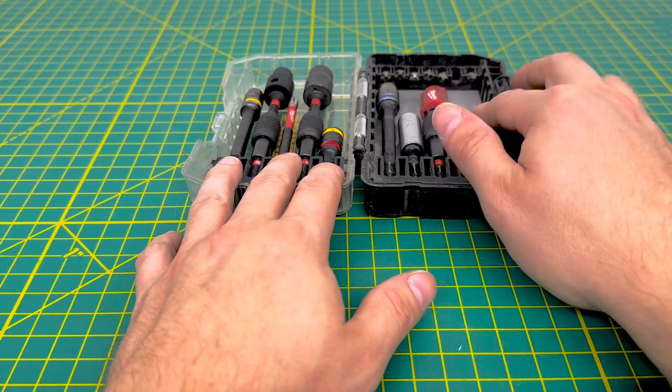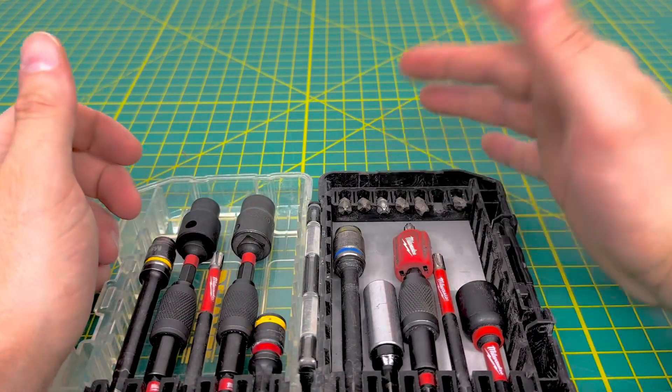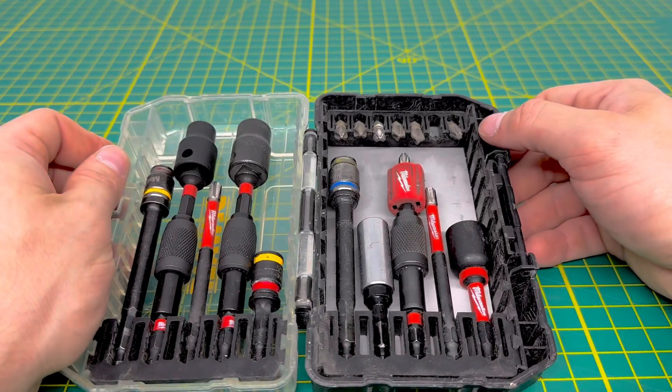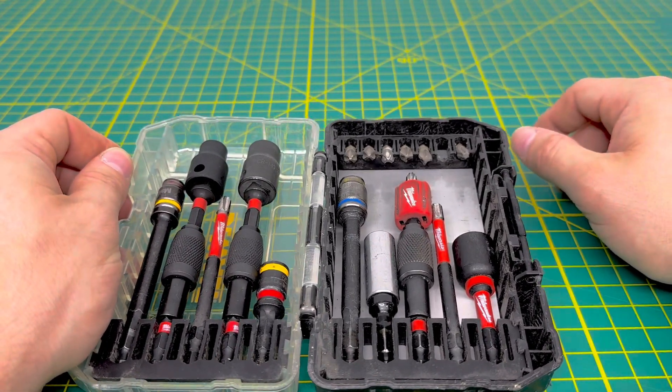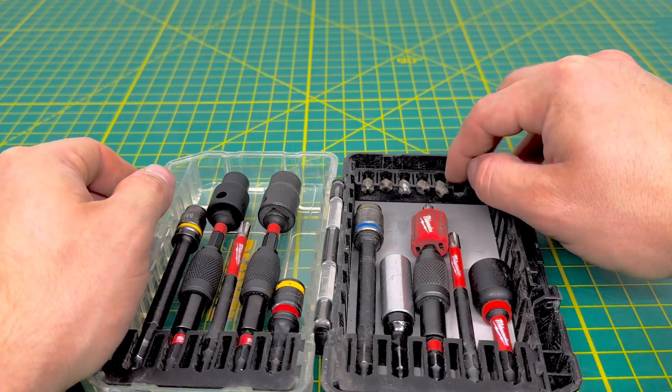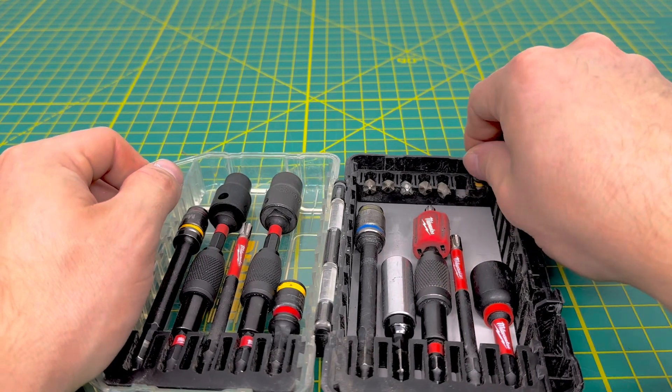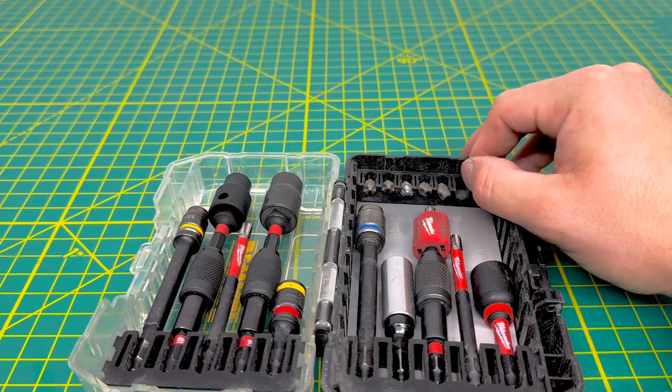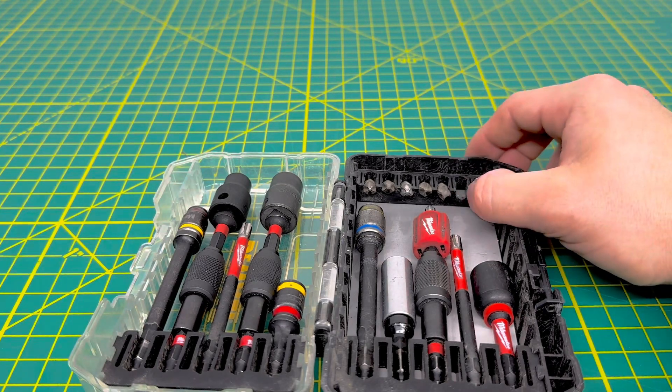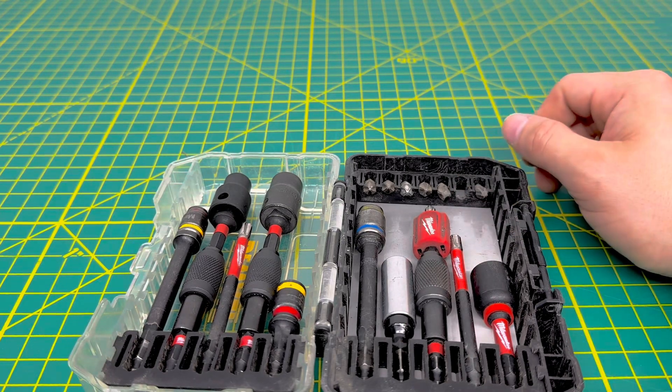And then up here is just a selection of different bits, mostly Phillips, Phillips number 2 bits, and a couple of – I'm currently missing one of my – well, I can't think of the name of it. It's the star bit or Torx bit. There you go. I believe it's the T25 that I'm missing right now.